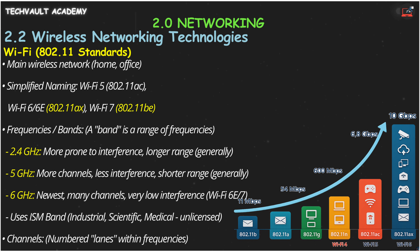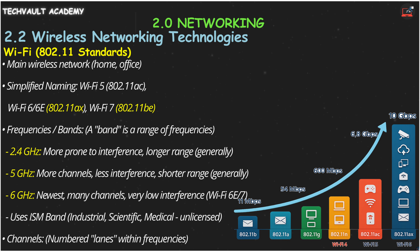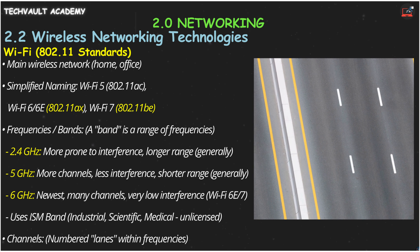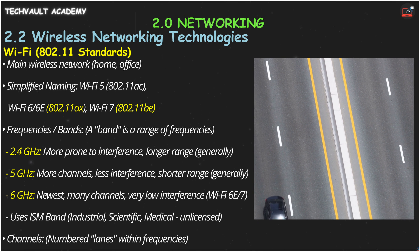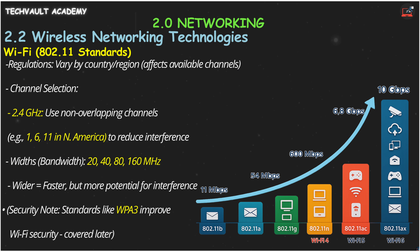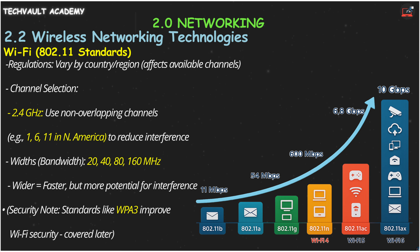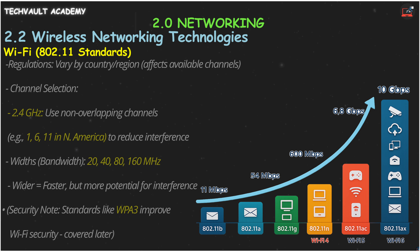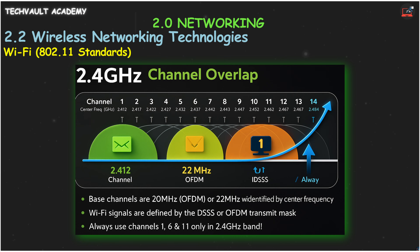Both Wi-Fi and Bluetooth often use what's called the ISM band — unlicensed frequencies set aside for industrial, scientific, and medical devices. These frequencies are grouped into channels, like numbered lanes on our highway. Not all Wi-Fi channels are available everywhere, as governments regulate which frequencies can be used in each country. When it comes to channel selection, especially in the crowded 2.4 GHz band, remember that in North America only channels 1, 6, and 11 are truly non-overlapping. Choosing one of these helps reduce interference from nearby networks.